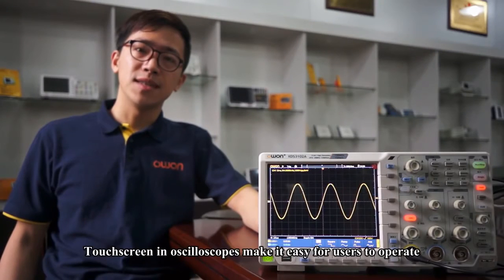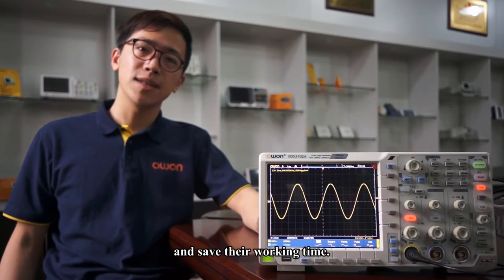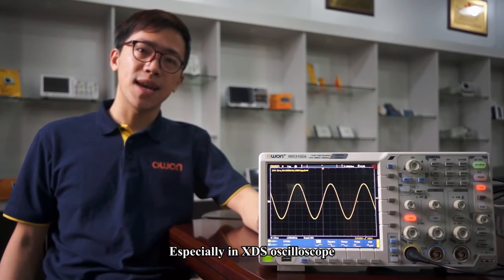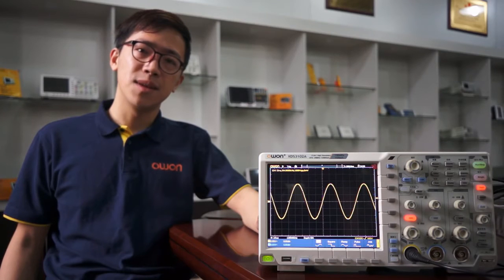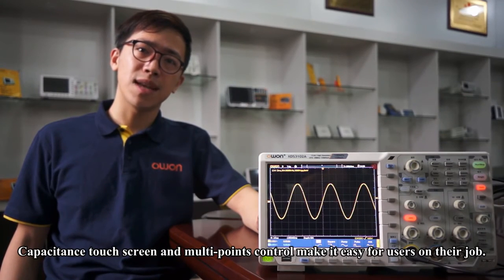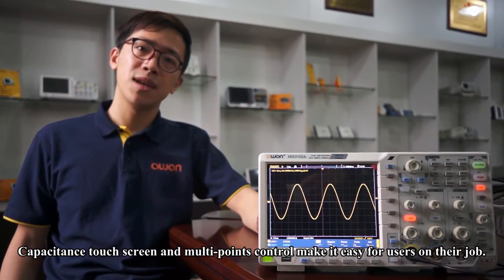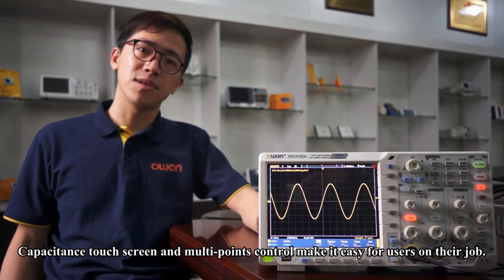Touch screen on an oscilloscope makes it easy for users to operate and save their working time, especially the XDS series oscilloscope with capacitive touch screen and multipoint controls, making it easy for users on their job.